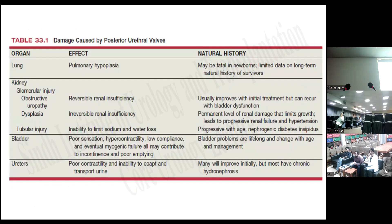Posterior valve can damage the lungs, kidneys, bladder, and ureters. In the lungs, it causes pulmonary hypoplasia due to decreased urine and oligohydramnios. In the kidneys, it causes reversible and irreversible renal insufficiency and electrolyte imbalance. In the bladder, there is poor sensation, hypercontractility, and low compliance. In the ureters, there is poor contractility and inability to transport urine.